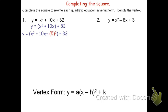Now, if I'm adding 5 squared to the equation, I also have to subtract 5 squared to balance the equation out. Adding 5 squared and subtracting 5 squared does not change the equation. To simplify 5 squared, that's 25. We can then say it's the quantity x squared plus 10x plus 5 squared plus 32 minus 25, and 32 minus 25 is 7.